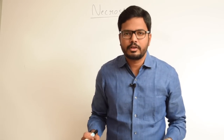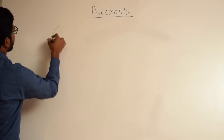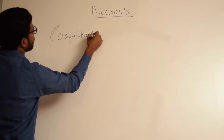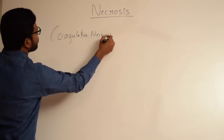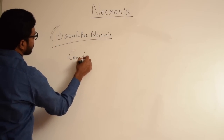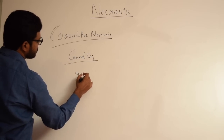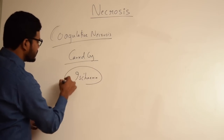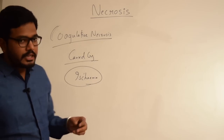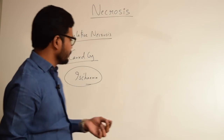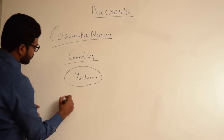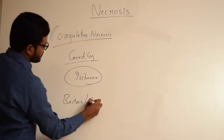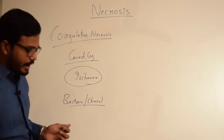Coming to the first type, coagulative necrosis — it is the most commonly seen necrosis and it is mainly caused by ischemia, which is cessation of blood flow. This ischemia leads to a local injury which predisposes that tissue to coagulative necrosis. Apart from ischemia, other causes include bacterial-related and chemical-related causes.